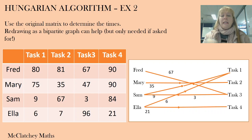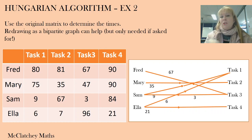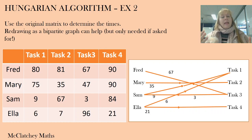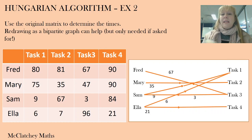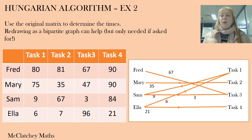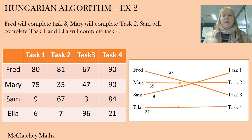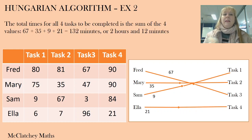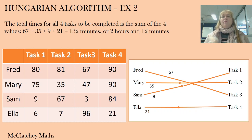Here's our original matrix and on the right hand side is the graph. It shows clearly that there are a couple of tasks only one person can do: Ella is the only person who should do task 4, and Mary is the only person who should do task 2. However, Sam or Ella could do task 1, and Fred or Sam could do task 3. Since Ella is already allocated to task 4, task 1 must go to Sam. That leaves Fred with task 3. We write a statement summarising the allocation.